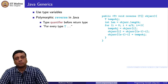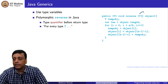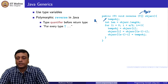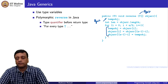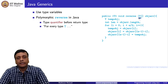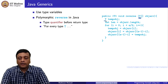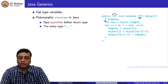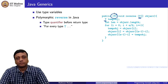Let us start with the polymorphic reverse. Earlier we had said the array was of type Object, and so was the temporary object used for swapping in the loop. Now what we are saying is that this array is of some arbitrary type T, and the object needed to achieve the swap is of the same type T. There is a notion of a type variable, and this angle bracket notation <T> tells us that this function depends on this type variable.